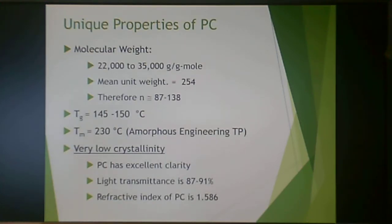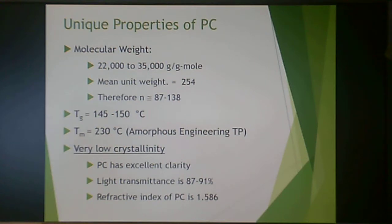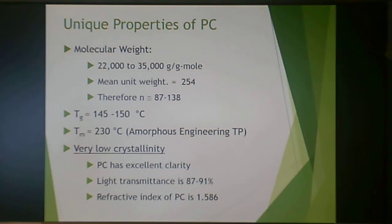Polycarbonate typically has a molecular weight of 22,000 to 35,000, with a mean repeat unit weight of 254, giving 87 to 138 repeat units. It has a Tg of 145 to 150°C, very low crystallinity with some crystalline melting at 230°C, and is considered relatively amorphous. This gives it excellent clarity, with light transmission of about 87 to 91 percent and a refractive index similar to glass.